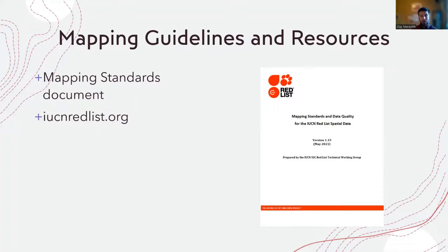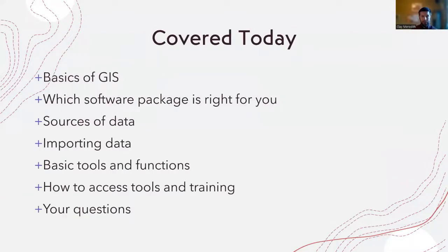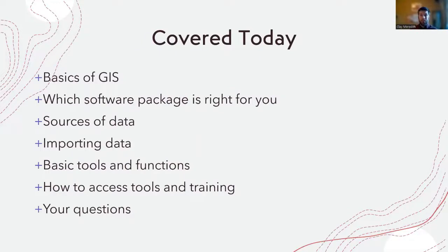This document doesn't have a lot of information on how to translate these guidelines into a map using GIS software, and that's what we're going to get into today. Since a full GIS course is outside the scope of this webinar, I'll be focusing on some basic terminology to help you get started and look for additional help and training. Making maps for the Red List is a relatively simple application of GIS software. Most people can learn how to make a map within an afternoon without too much trouble.